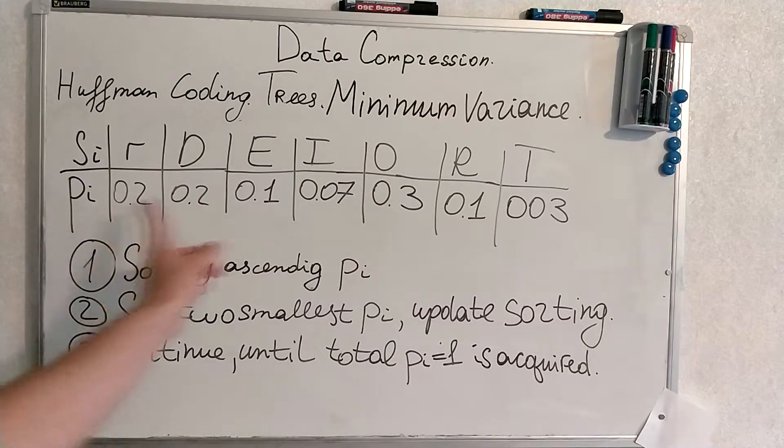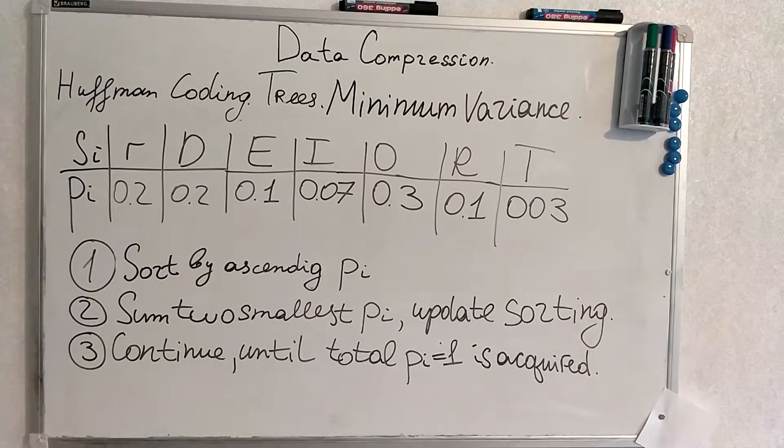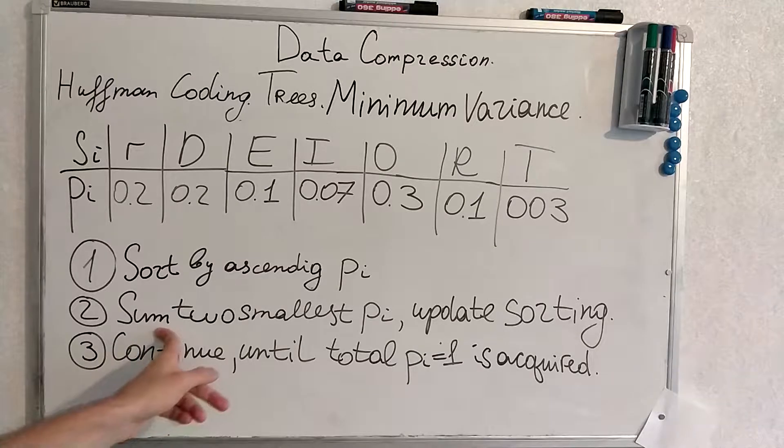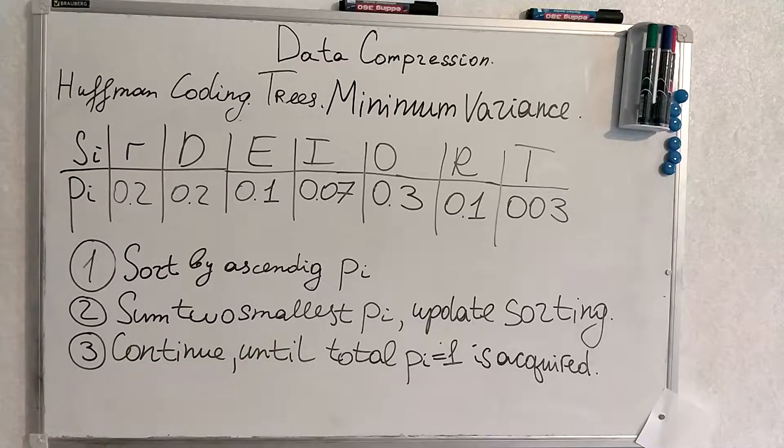We are going to sort these probabilities by ascending order. And then we will sum up two smallest probabilities and update the sorted order. We will continue until total probability 1 is acquired.